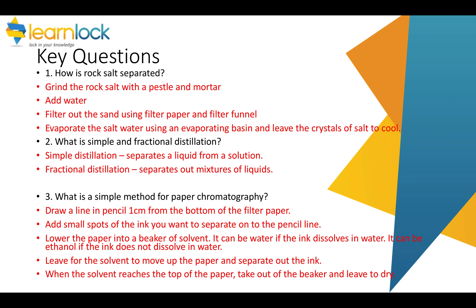What is the method for paper chromatography? Draw a line in pencil one centimetre from the bottom of the paper. Add small spots of ink to the pencil line. Lower it into the solvent, then leave the solvent to move up the paper and separate out the ink. As it reaches the top, take it out and leave it to dry.